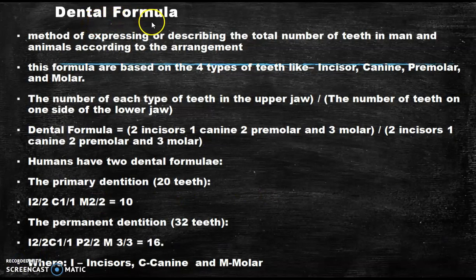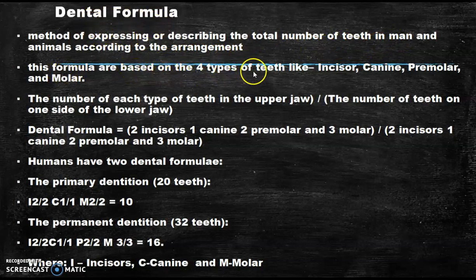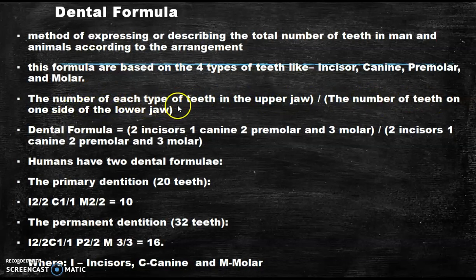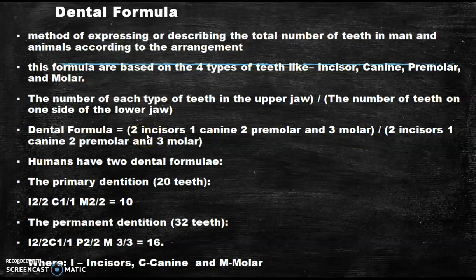The next one is dental formula — the method of expressing the total number of teeth in humans and animals according to their arrangement. This formula is based on four types of teeth: incisors, canine, premolar and molar. It is written as the number of each type of teeth in the upper jaw divided by the number of teeth on one side of the lower jaw. You can remember it as ICPM: I for incisors, C for canine, P for premolar and M for molar. For example: two incisors, one canine, two premolars and three molars in the upper jaw.